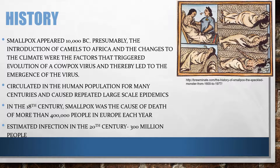Now let's talk about the history of smallpox. Smallpox is believed to have appeared around 10,000 BC. Presumably the introduction of camels to Africa and changes in the climate were the factors that triggered the evolution of cowpox into smallpox. In the 18th century, smallpox caused the deaths of more than 400,000 people in Europe each year, with an estimated 300 million people infected in the 20th century alone. It circulated in the human population for many centuries and caused repeated large-scale epidemics.